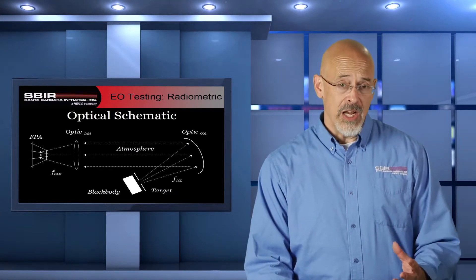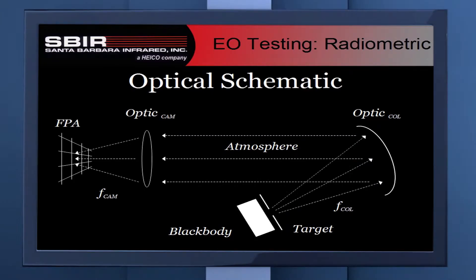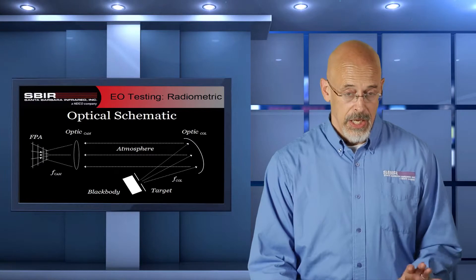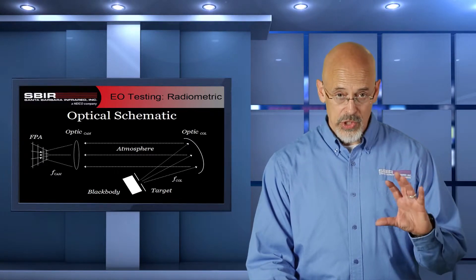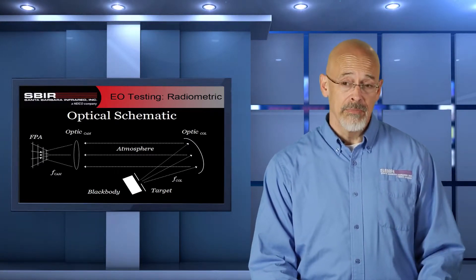We can take all those components, and what we show here is an optical schematic showing these key pieces: the black body, the target, the collimating optic, the transmission through the atmosphere, and then the components of the camera — which is the collecting optic that focuses it down on the focal plane array. Those are the key components, and we're going to be looking at that a little bit later.